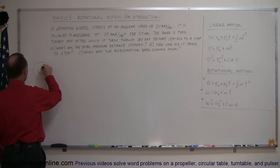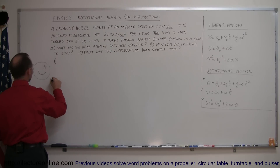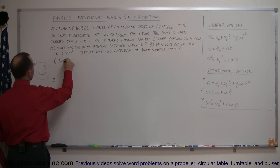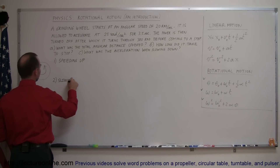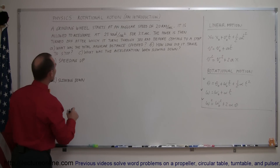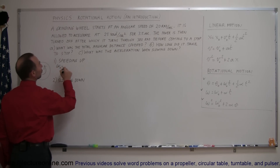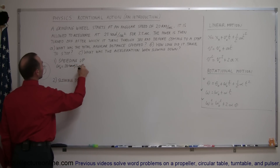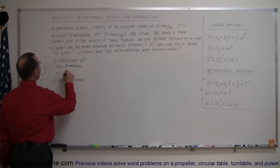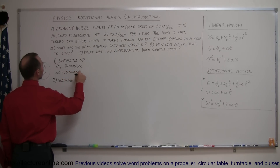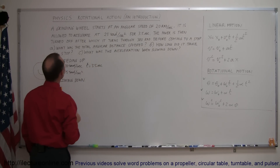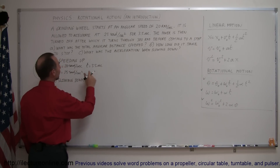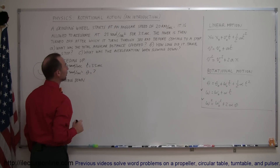I have a rotating disc, and there are two parts to the problem — part one and part two. In part one we're speeding up, and in part two we're slowing down. During the speed-up part: the original omega is equal to 20 radians per second, the acceleration alpha is equal to 25 radians per second squared, the time is three and a half seconds, and theta is unknown.